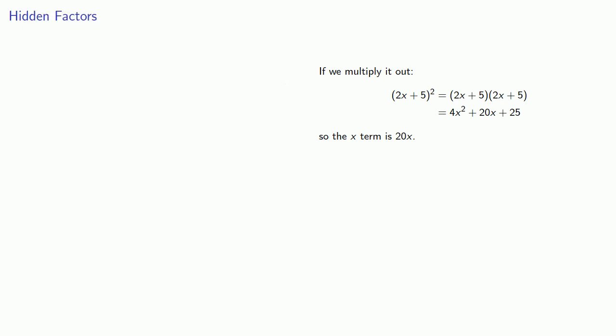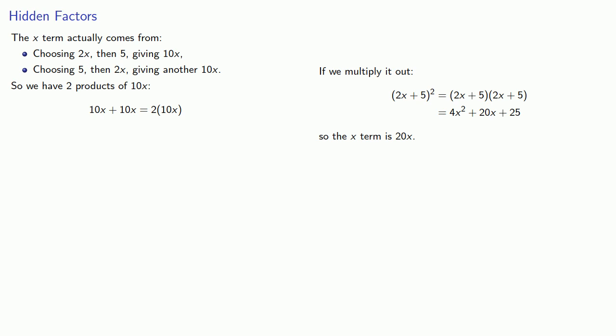Let's think about that a little bit more. The x term actually comes from choosing 2x and then 5, and this actually gives us 10x. We could also choose 5, then 2x, which gives us another 10x. So in fact, we have two products of 10x, and so that's 10x plus 10x, well, that's 20x.